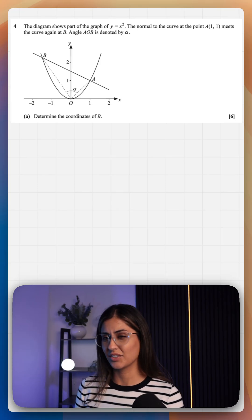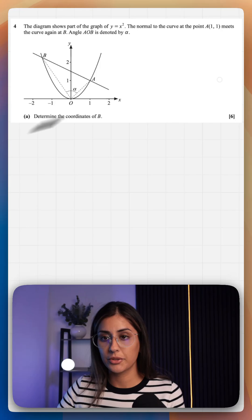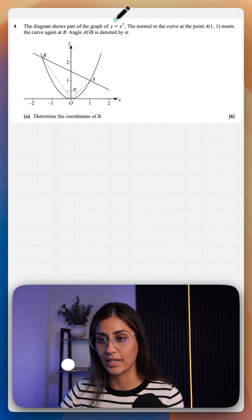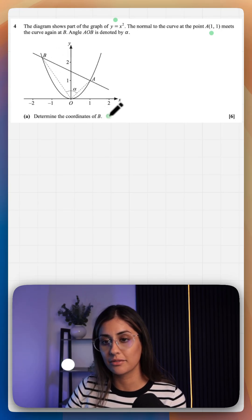This was an OCR question. I think it's on differentiation. Let's have a look. So the diagram shows part of the graph y equals x squared. The normal at the point (1,1) meets the curve again at the point B. Determine the coordinates of B.